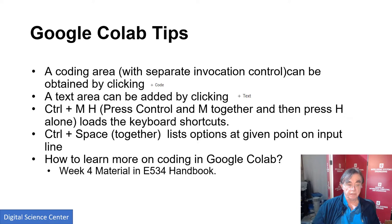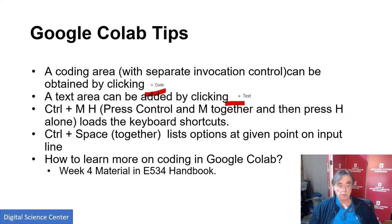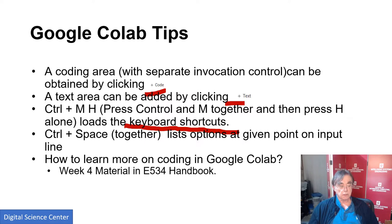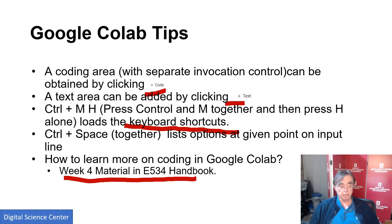There's the stuff about Plus Code and Plus Text. If you want keyboard shortcuts, Control M followed by H gives you those, of which there are a huge number. If you're typing a Python command, Control Space will give you the allowed options. There is material in the lab section for this class, which is in the E354 handbook where these lectures are indexed, and you can find out more about CoLab there as it will be part of your lab assignment.